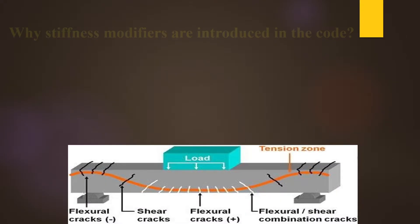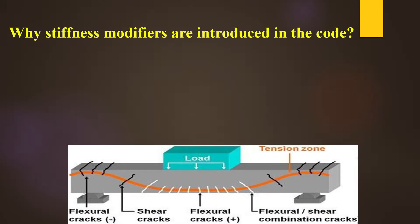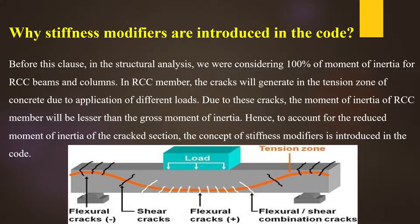There are stiffness modifiers. Why are they introduced in the IS code? Before this clause was introduced, the structure was analyzed with 100% moment of inertia. We had our columns and beams as reinforced concrete members.